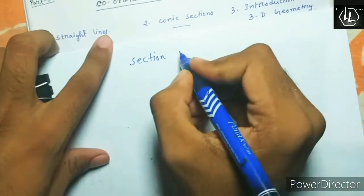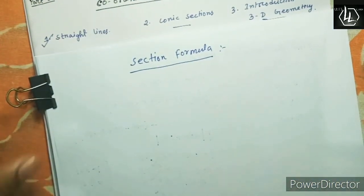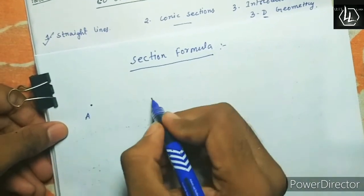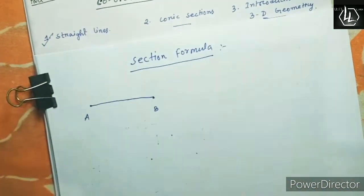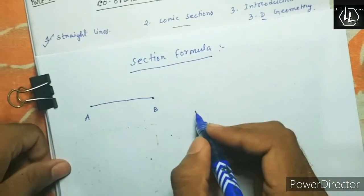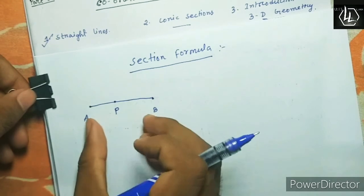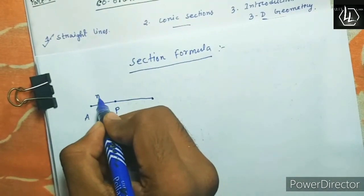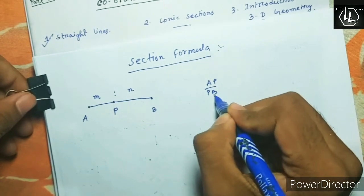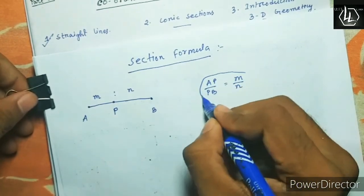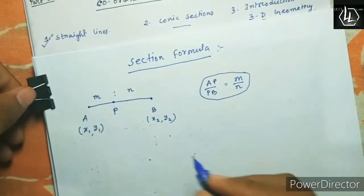So what is the section formula? Suppose you have two points A and B. Join these two points and you get a line segment AB. There is a point P which divides the line AB in a ratio of M to N, meaning AP to PB equals M to N. You are given the coordinates of A as x1, y1 and the coordinates of B as x2, y2.